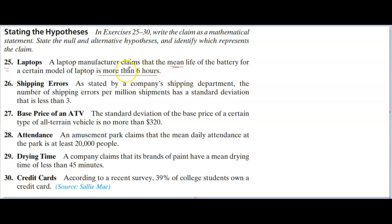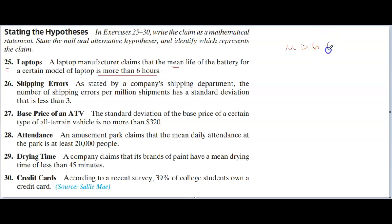They claim that the mean is more than six hours. Because we're working with population, that's mu. So you write: mu is greater than six. I like to put in parentheses the word 'claim,' because this was my original claim — the claim that was stated in the problem.